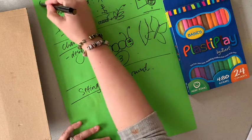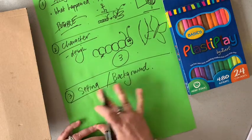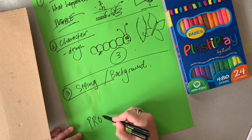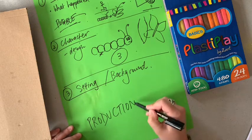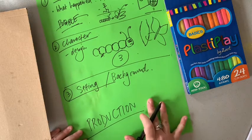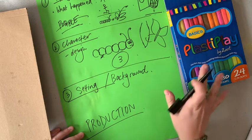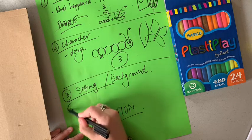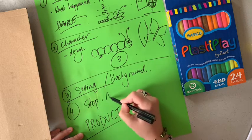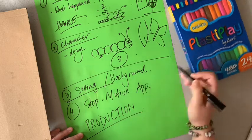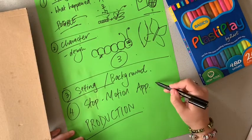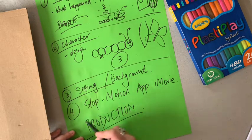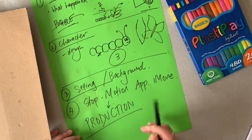Once you've sorted out these three things and created everything, that's when you're ready to watch the next video, which will teach you how to actually go about filming — that's called the production stage. You'll also need to download the Stop Motion app from your app store, and I show you a version that will also need iMovie. You don't need those today, but just remember you will need to download those prior to the production stage.